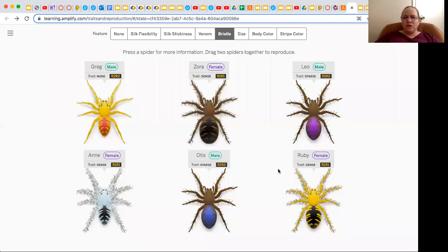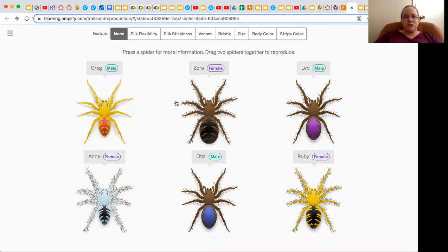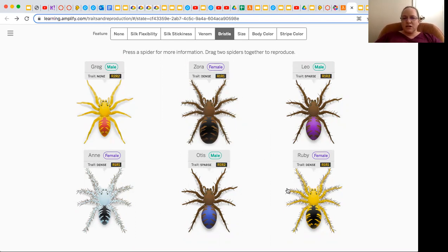So when you come here, you can see that all the members of this family, right? And then you can move it. And see, these are the features. So right now, none of the features are being shown. But like if we clicked on bristle, we could see the different trait. This person, Ruby, has dense bristles and Leo has sparse bristles. The body color, Zora has a brown body, as does Leo, as does Otis, and Ruby has a yellow one.